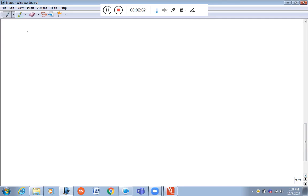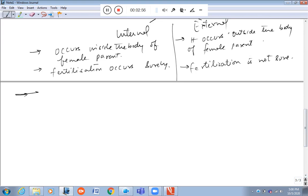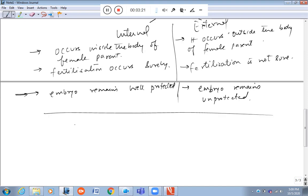In internal fertilization, the embryo remains well-protected. Examples of internal fertilization include human beings. Examples of external fertilization include fish and amphibians like frog.